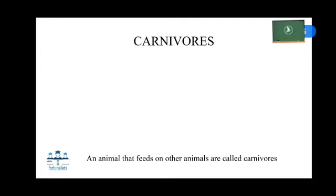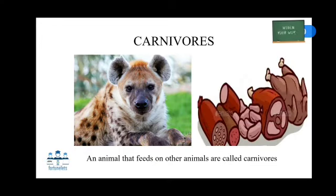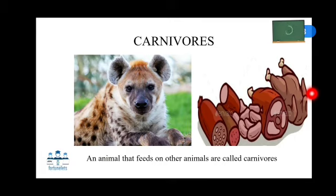Carnivore. The animal that feeds on other animals is called a carnivore. A carnivore gets its food by hunting other animals. Generally, a carnivore eats herbivores, but sometimes they eat omnivores and other carnivores. Examples of carnivore animals are wolf, bobcat, rat snake, frog, spider, etc.